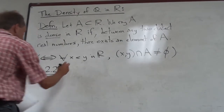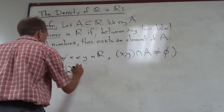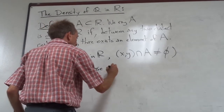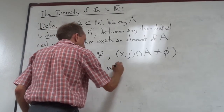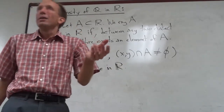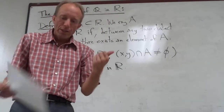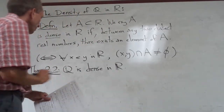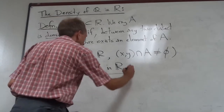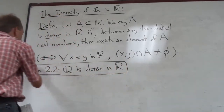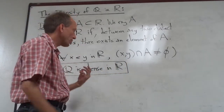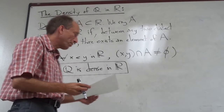And that is something that is true about Q. So Theorem 2.2: Q is dense in R. Between any two real numbers we can always find a rational number. I'm going to prove this in just a minute, but the proof actually relies on another result which is also extremely important — something called the Archimedean principle.